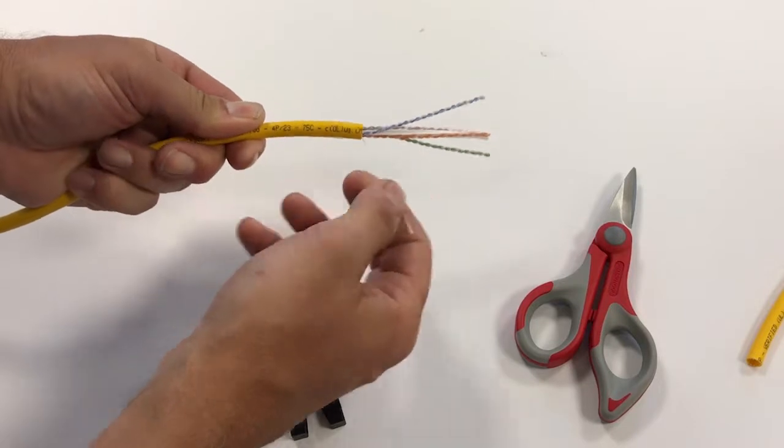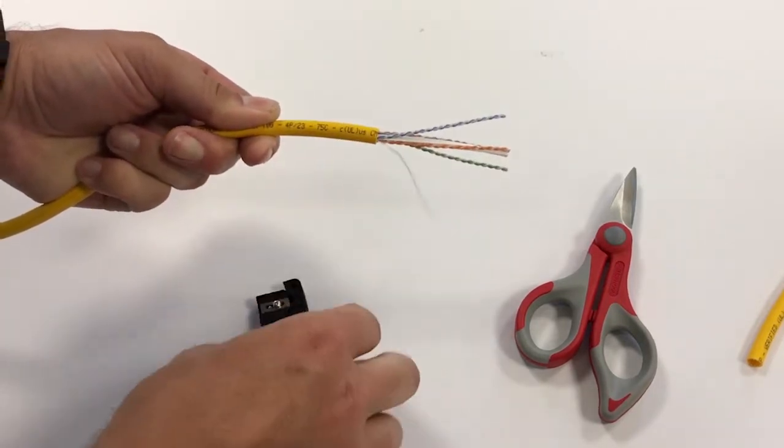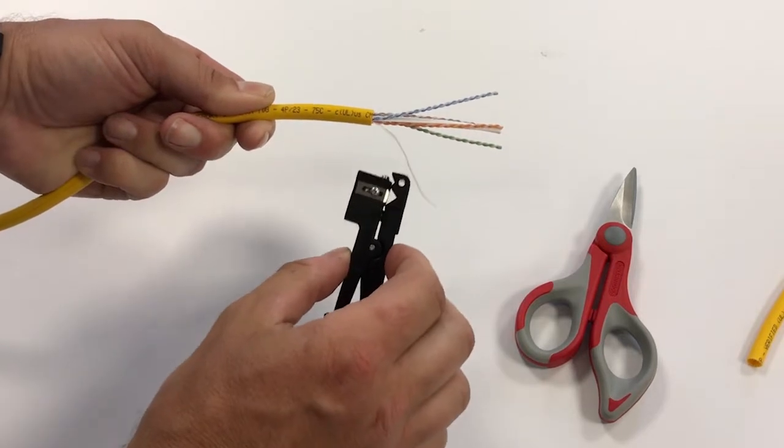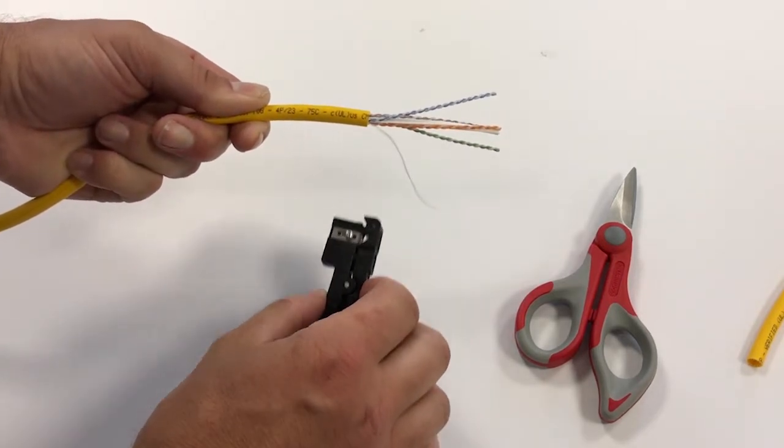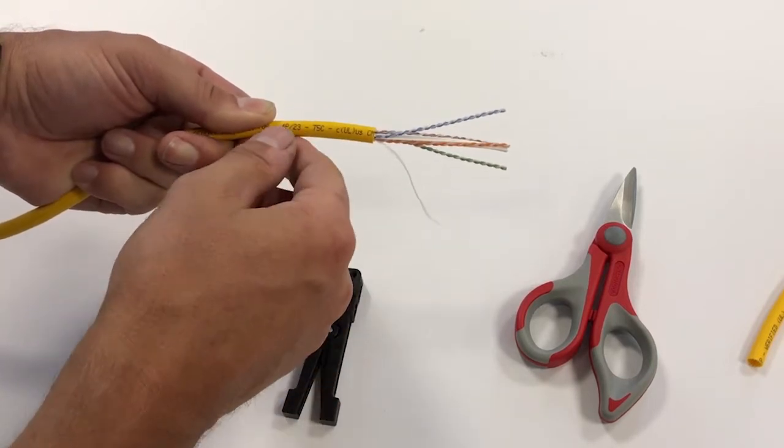The purpose of the ripcord is to allow you to pull it back and expose core that hasn't potentially been nicked by the cable ringer. Sometimes the cable ringer blade can cut into the insulation and the copper, and that can negatively impact performance.